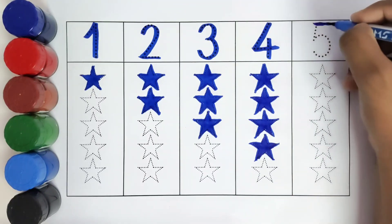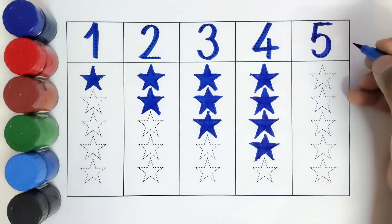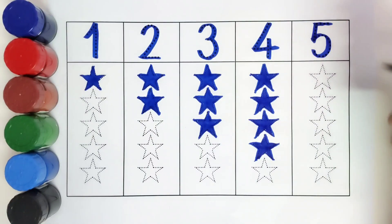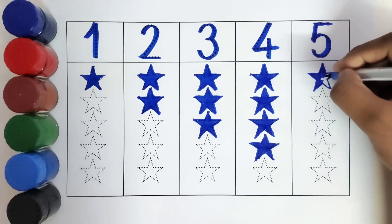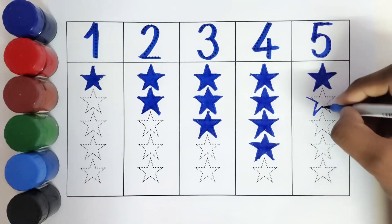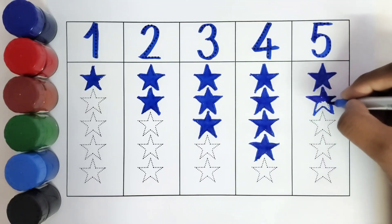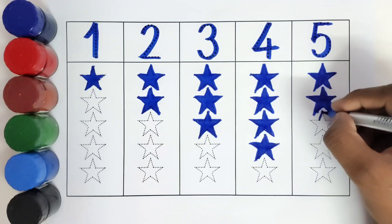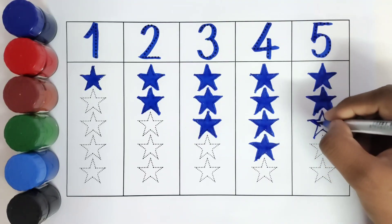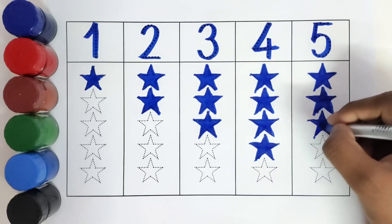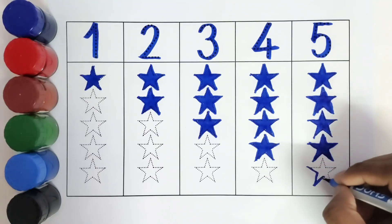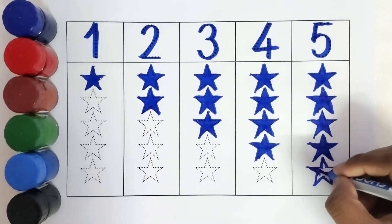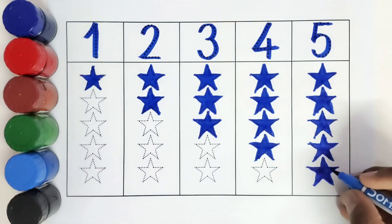This is 5, number 5. How many stars do we have to color? 1, 2, 3, 4, 5. We have colored 5 stars.